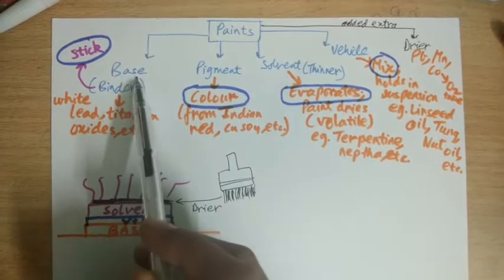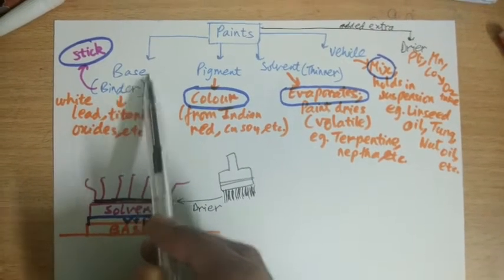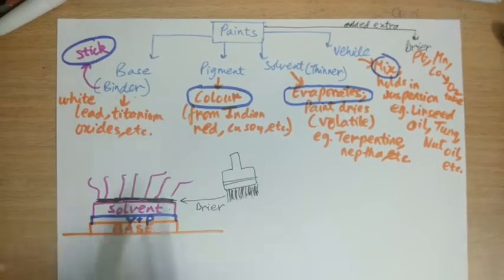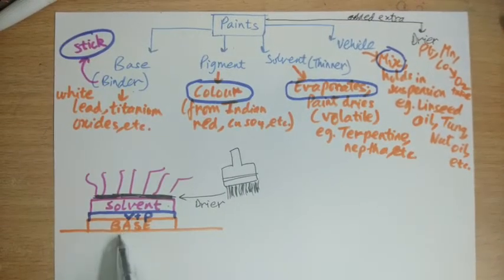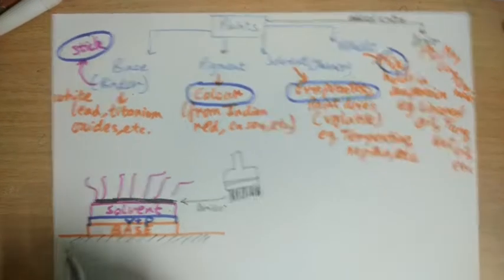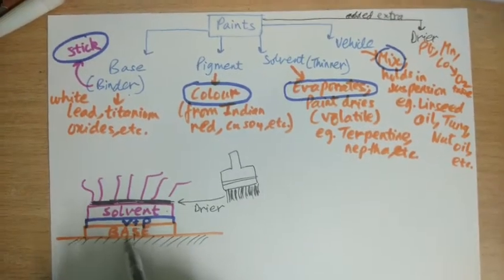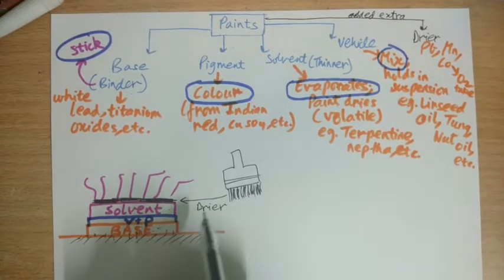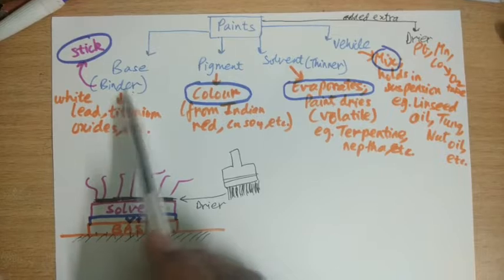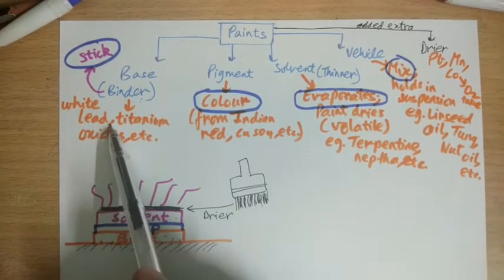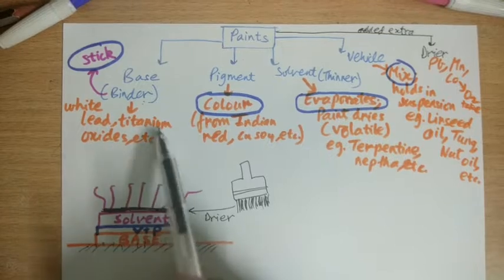So first paint component is base. Base, as you know, is like a binder. It sticks. This base will help us stick to the wall or something over which we want to paint. Otherwise the paint would get removed easily. So this base or binder will help in sticking. This is generally made up of white lead or white titanium oxides or iron oxides, etc.